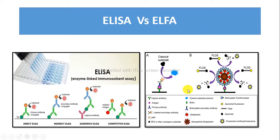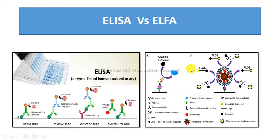a hundred times more sensitive than ELISA. ELISA is the technique used for detecting and measuring antigens or antibodies in a solution with the use of a chromogenic substrate, whereas ELFA is an immunological method in which the enzyme catalyzes a fluorescence and